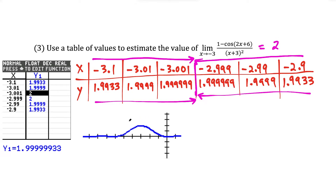One more thing: looking at a graph of this function in the neighborhood of negative 3, as x approaches negative 3 from both sides, we're heading up to the top of this hill, and the top of the hill goes up to y equals 2. Be mindful that the function is not defined at negative 3 — so technically there's a hole in the graph at that location. But remember, your function does not have to be defined at a location for you to have a limit there.